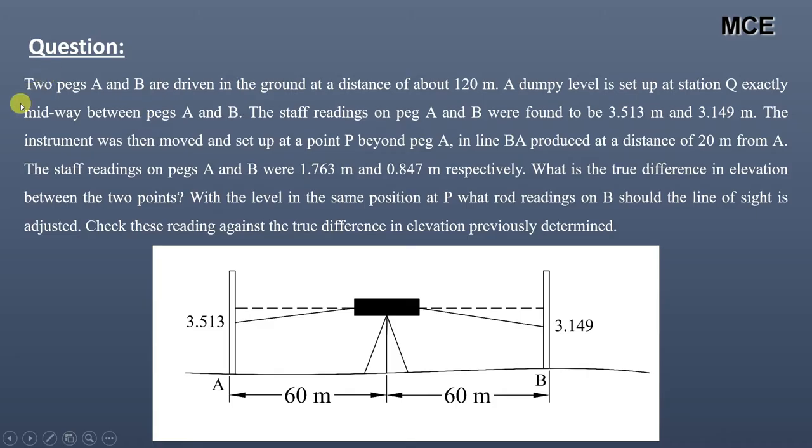The question states that two pegs A and B are driven in the ground at a distance of about 120 meters. A dumpy level is set up at station Q exactly midway between pegs A and B. The staff readings on pegs A and B were found to be 3.513 meters and 3.149 meters.